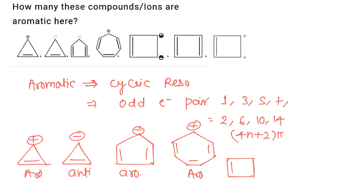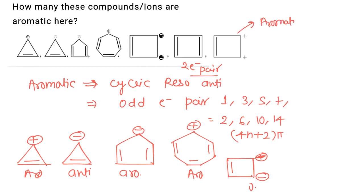The next molecule has three electron pairs in total, so it will be aromatic. The following molecule has two electron pairs, so it will be anti-aromatic. The last one will be aromatic. In total, aromatic compounds are: one, two, three, four, and five. So five aromatic compounds are present.